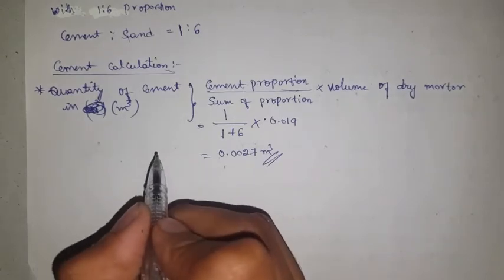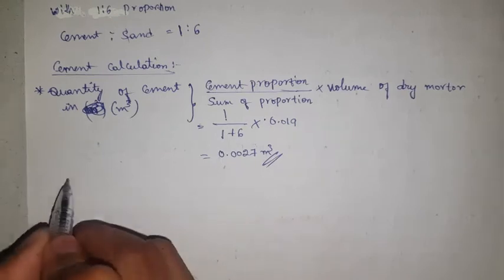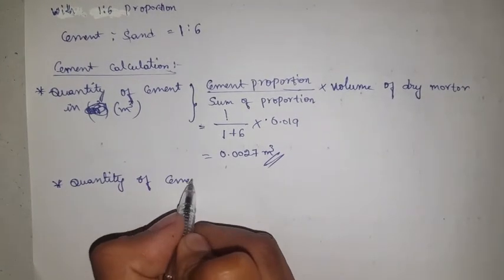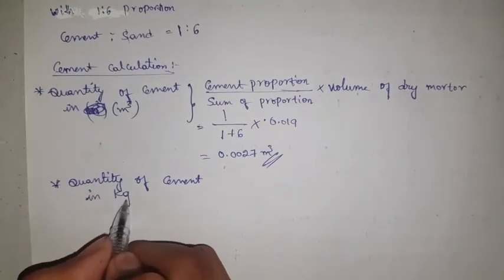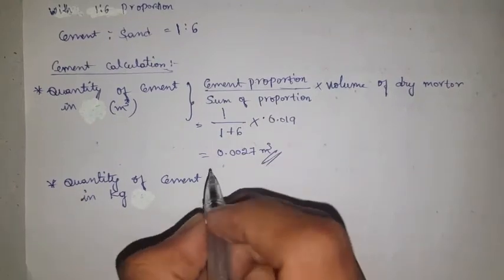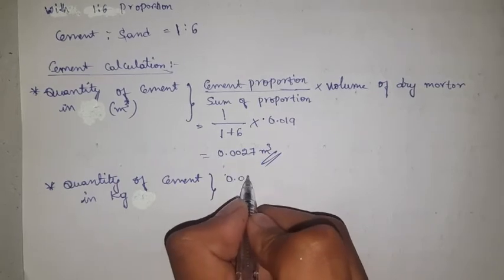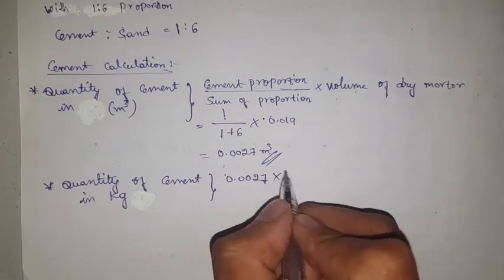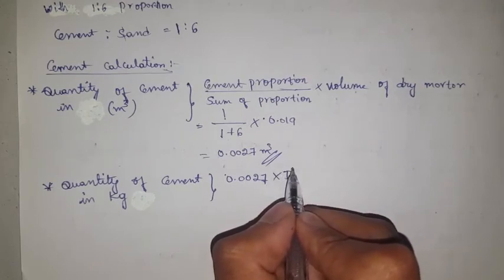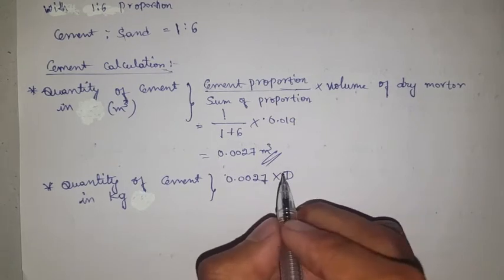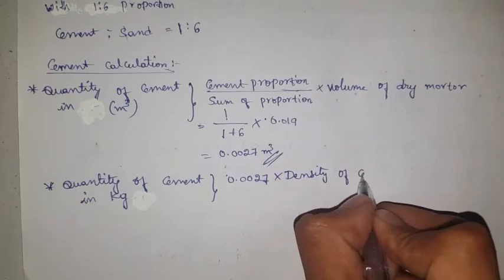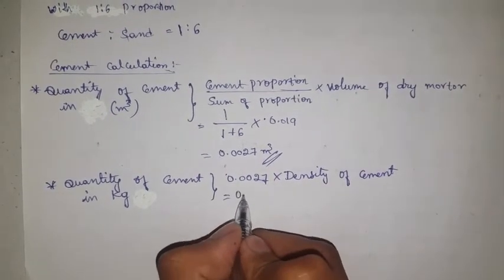Quantity of cement in kg: quantity in meter cube is 0.0027, multiplied by density of cement = 1440 kg per meter cube. Calculation: 1440 kg per meter cube is the density of cement. Quantity of cement in kg equals 0.0027 into 1440.